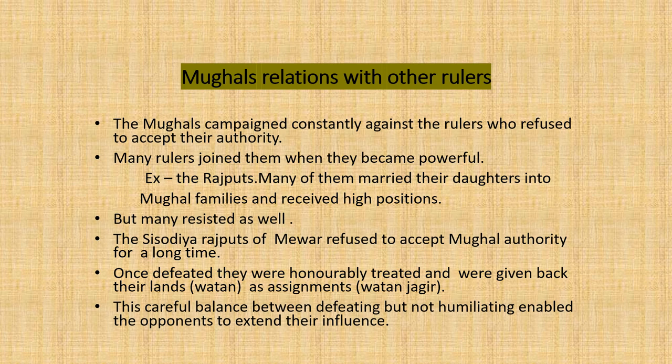Once the Sisodiyas were defeated, the Mughals treated them honorably. They were not insulted; they were given back their land, which is called Vatan, and the assignment is called Vatan Jagir. This careful balance — defeating someone while still respecting and not humiliating them — enabled the Mughals to gain respect and extend their influence, which was appreciated by many rulers.